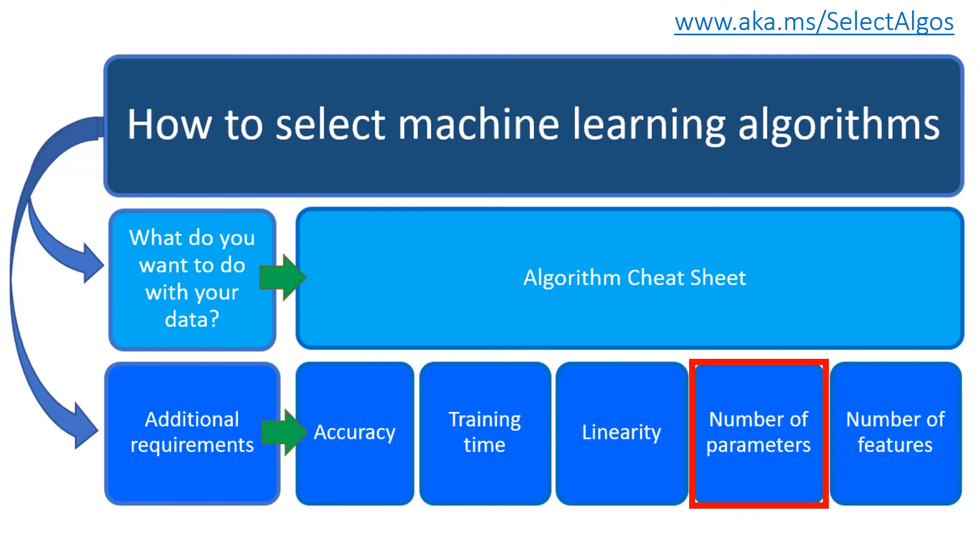The training time and accuracy of the algorithm can sometimes be sensitive to getting just the right settings. So typically algorithms with large number of parameters require the most trial and error to find a good combination.